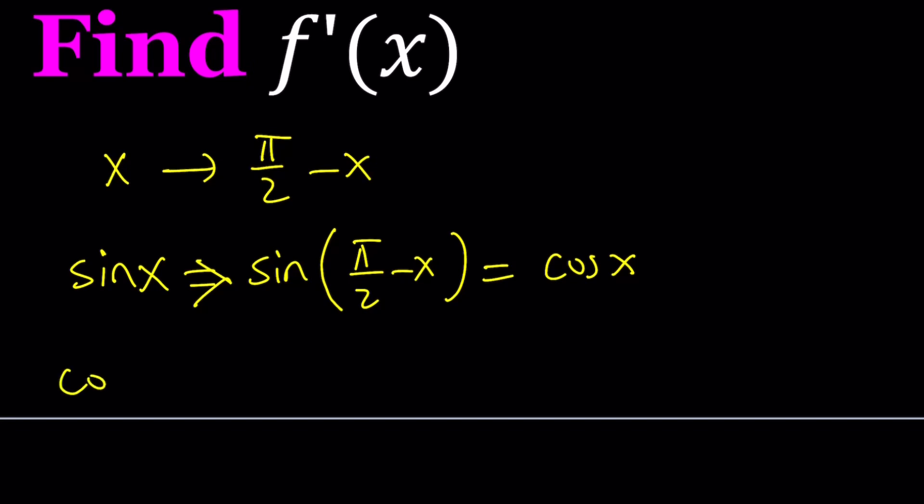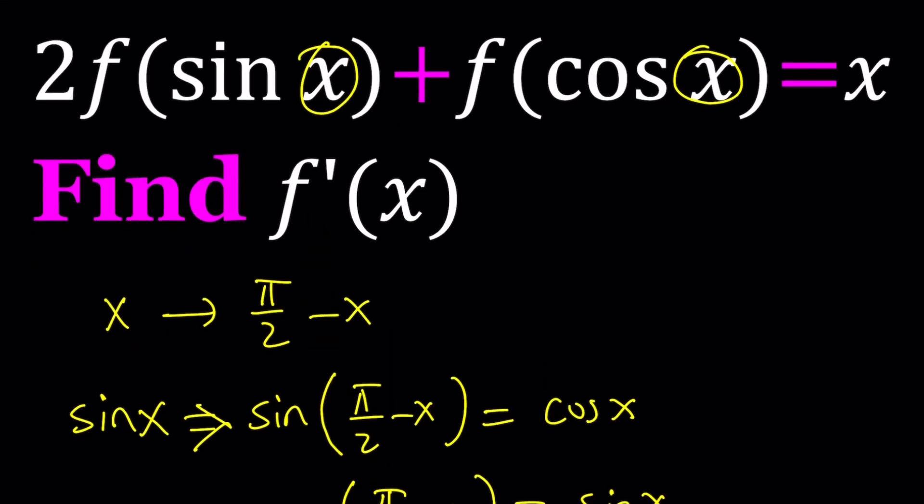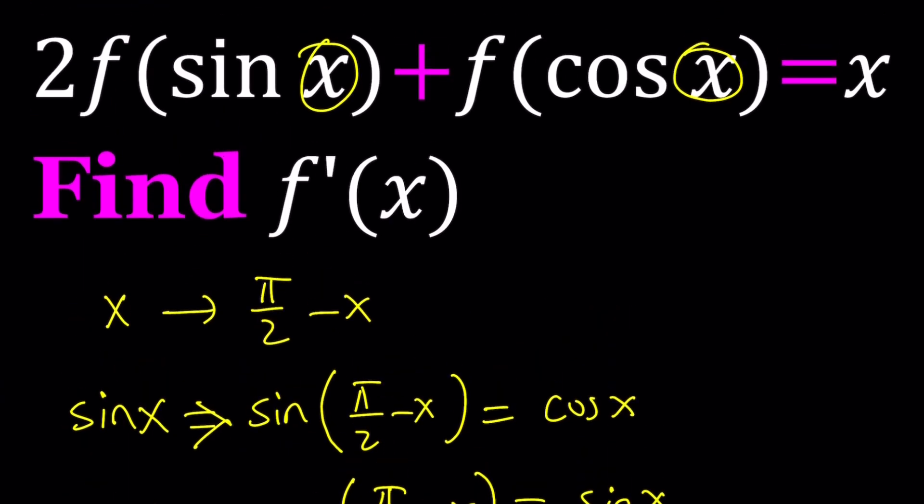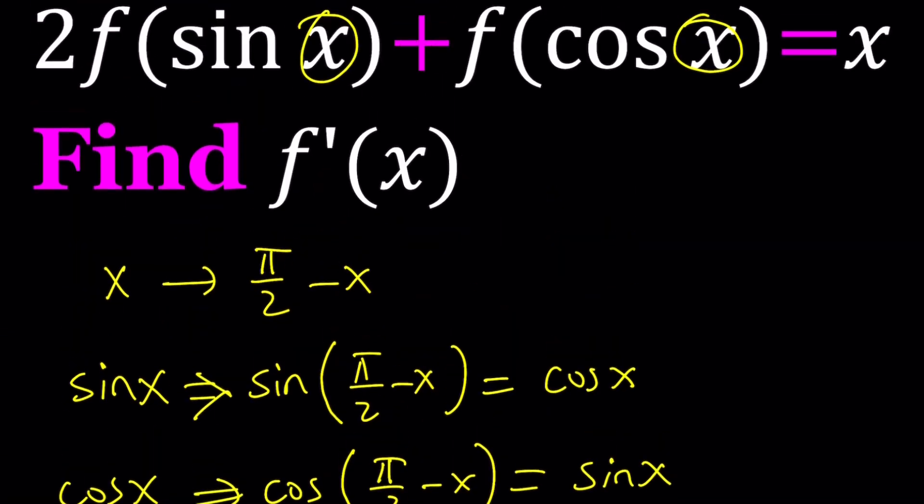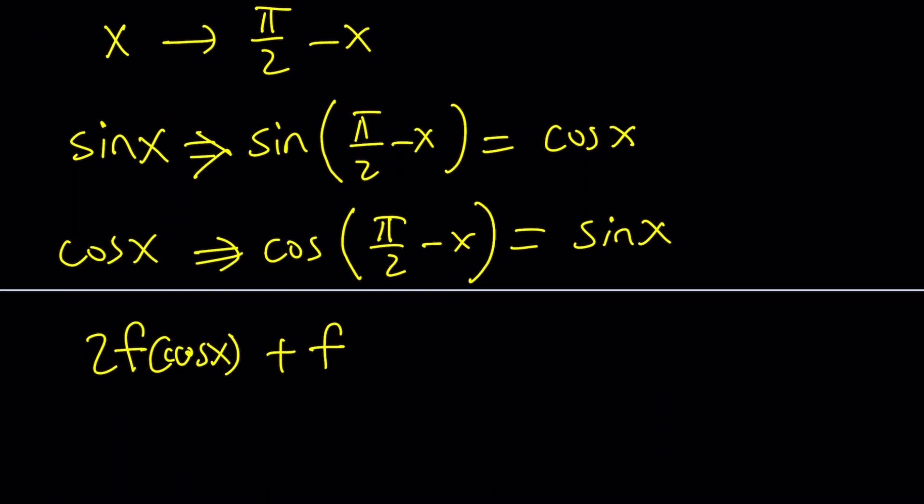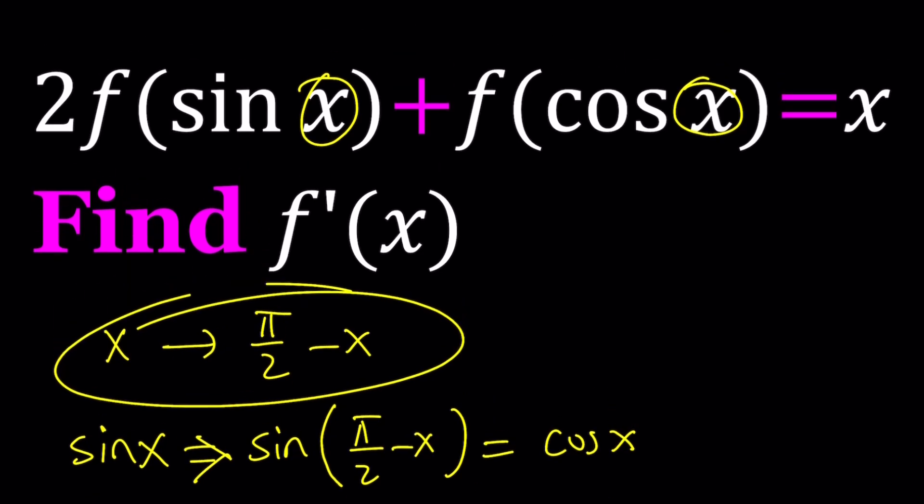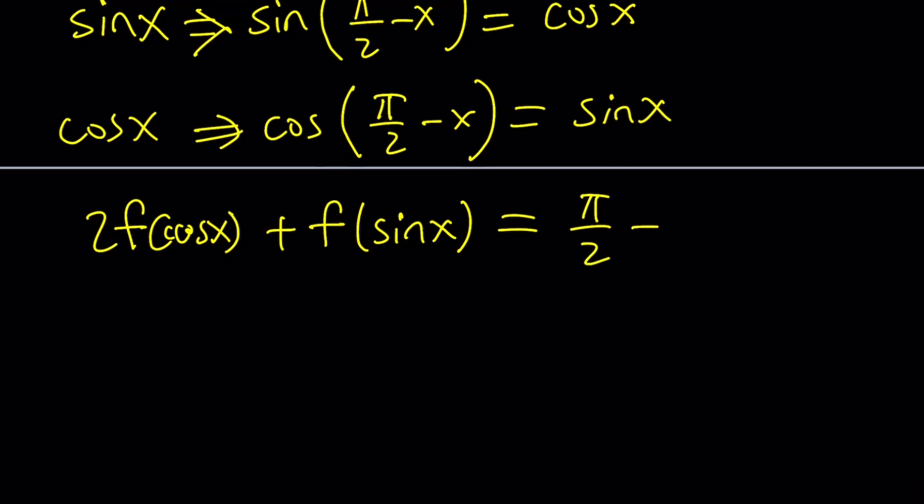And when you do this with cosine x, like replacing the x in cosine x with pi over 2 minus x, you're going to get cosine of pi over 2 minus x, and that's going to turn into sine x. So when we do these replacements, we're going to get 2 times f of cosine x plus f of sine x, and of course you have to make the replacements on both sides. x is going to be replaced with pi over 2 minus x on the right hand side.